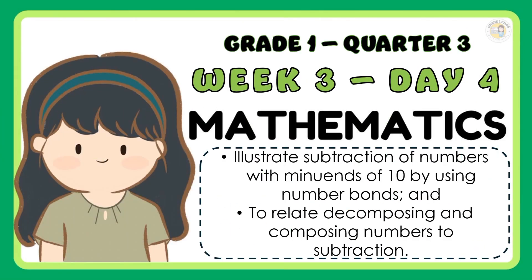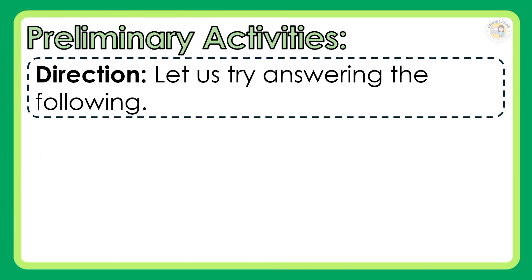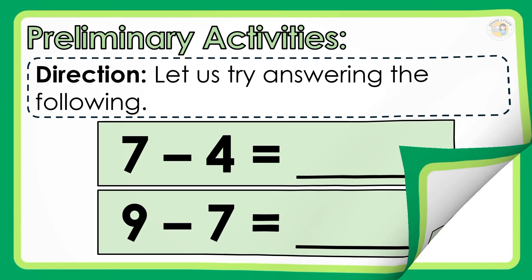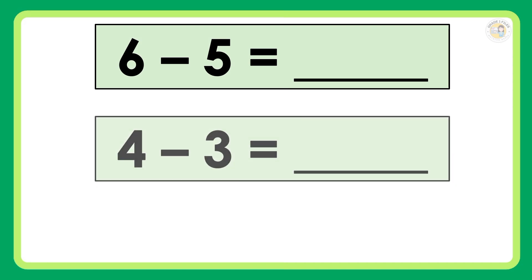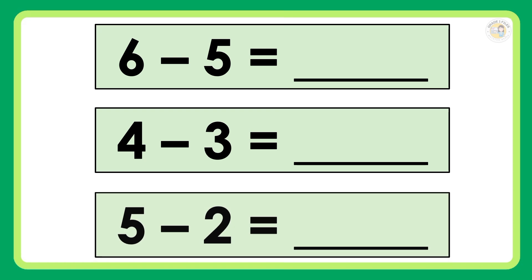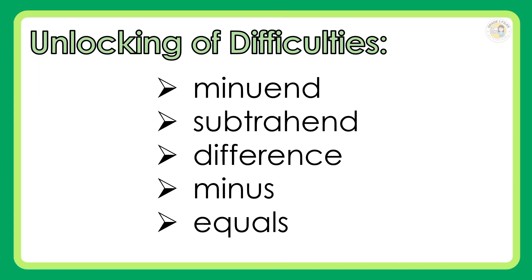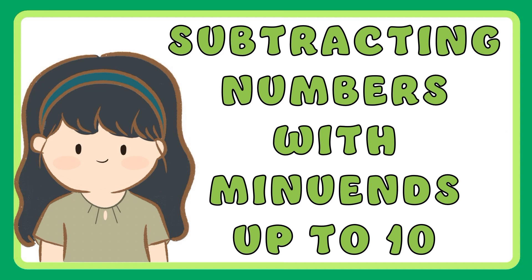Week 3, Day 4: Illustrate subtraction of numbers with minuends of 10 by using number bonds, and relate decomposing and composing numbers to subtraction. Let us try answering the following: 7 minus 4 is equal to blank. 9 minus 7 is equal to blank. 6 minus 5 is equal to blank. 4 minus 3 is equal to blank. 5 minus 2 is equal to blank. Today we are going to illustrate subtraction of numbers with minuends of 10 and relate it to decomposing and composing numbers. Unlocking of difficulties: Minuend, Subtrahend, Difference, Minus, and Equals.